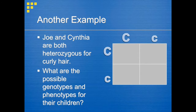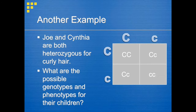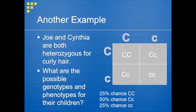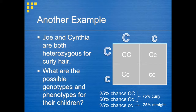For these parent genotypes we can fill in the Punnett square. We get three different possible genotypes for offspring: capital C, capital C; capital C, lowercase c; and lowercase c, lowercase c. Two genotypes are homozygous and two are heterozygous like the parents. The offspring has a 25% chance of capital C, capital C; a 50% chance of capital C, lowercase c; and a 25% chance of lowercase c, lowercase c. That means their children will have a 75% chance of having curly hair and a 25% chance of having straight hair.